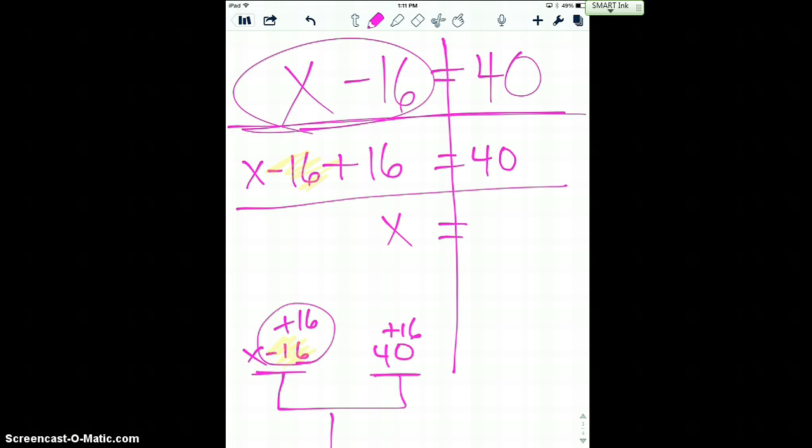And now as you can see, these are opposites. That'll be zero. And I'll just be left with x on this side. And then on the right, if I add 16 over there, just like I said here, 40 plus 16 is 56. And I have my solution of what I got earlier.